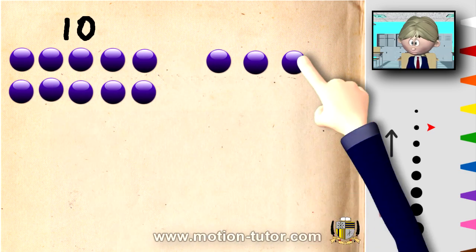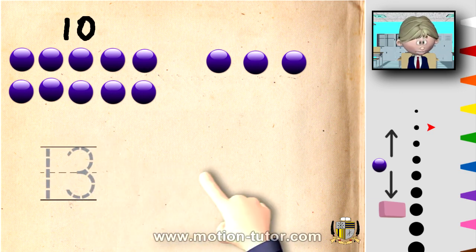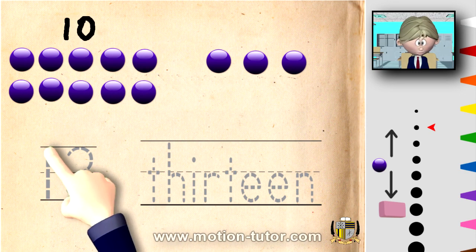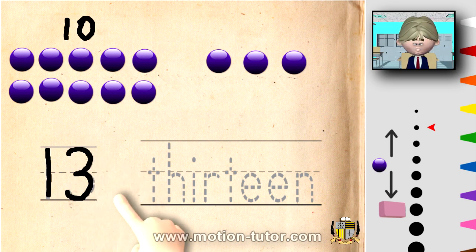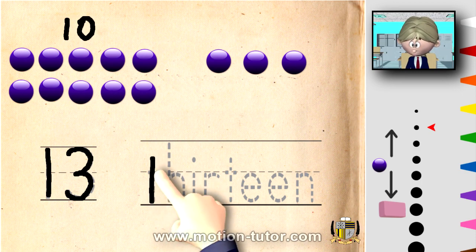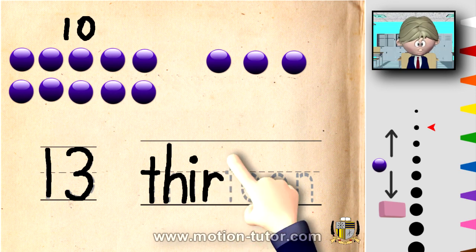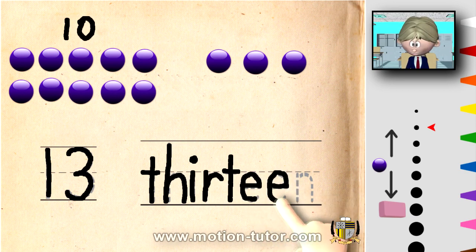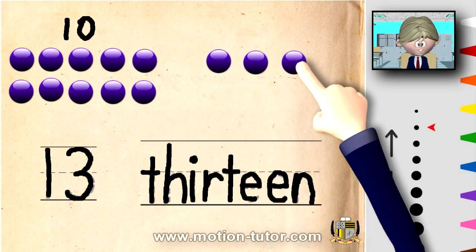So ten and three more is thirteen. The number thirteen looks like this, and how it's spelled looks like this. So let's trace the number thirteen. Thirteen has a one and a three. And it's spelled T, H, I, R, T, E, E, N. Thirteen — ten and three more is thirteen.